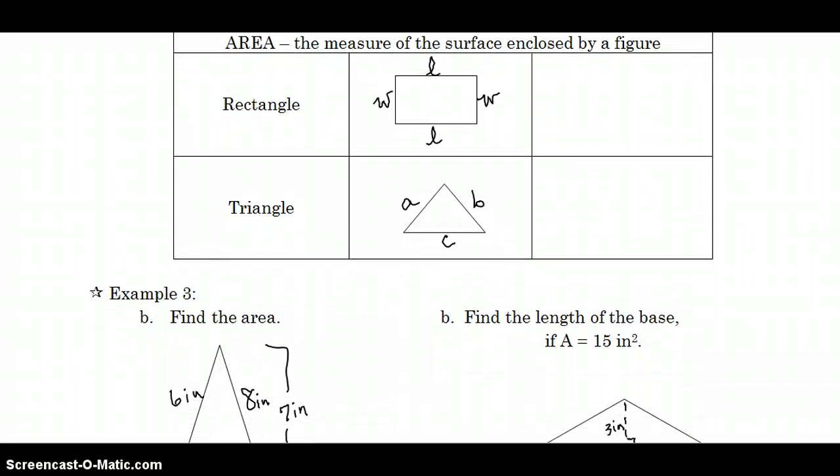Our next couple of formulas are going to deal with area. We're still talking about rectangles and triangles. The area of a rectangle is not length plus width, but length times width. If we multiply our length times our width, we find out the whole area of the rectangle.